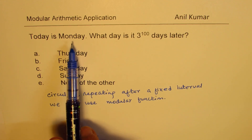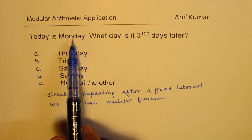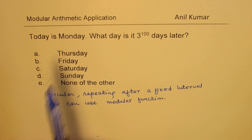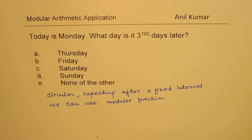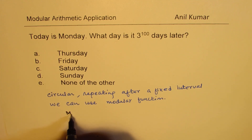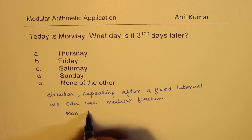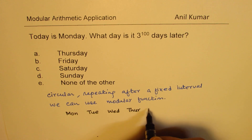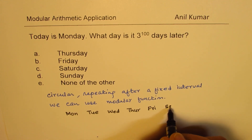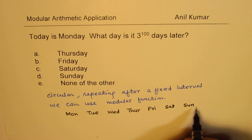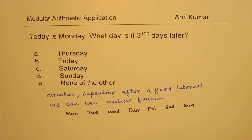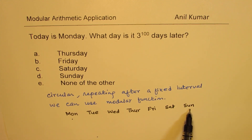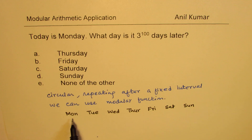So if today is Monday then after seven days it is going to be Monday again. After one day it will be Tuesday. So in a way it is a cyclic order: Monday, Tuesday, Wednesday, Thursday, Friday, Saturday, Sunday, and then Monday again. After six days it will be Sunday, and the seventh day is as good as zero — it is Monday back.